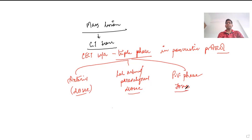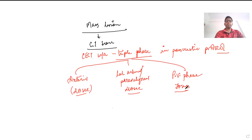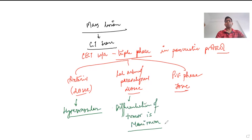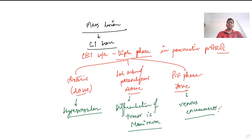Before contrast, a pre-contrast or non-contrast film is taken for comparison. The arterial phase depicts hypervascular tumors. In the parenchymal phase, differentiation of the tumor is maximum. In the portal venous phase, we can identify venous encasement, which decides the resectability of the tumor. In one word, CT scan is used for staging of the mass.